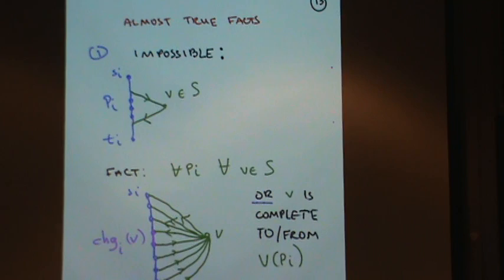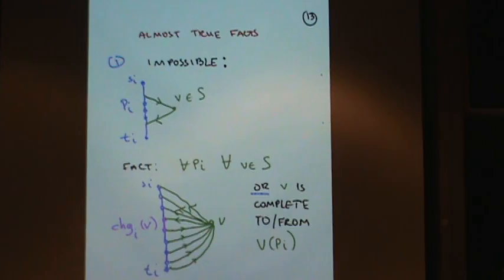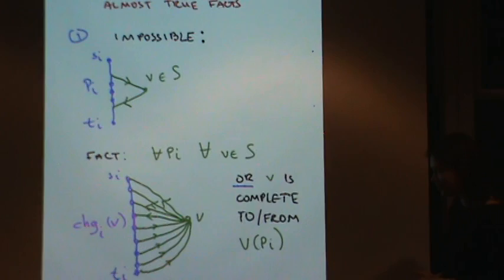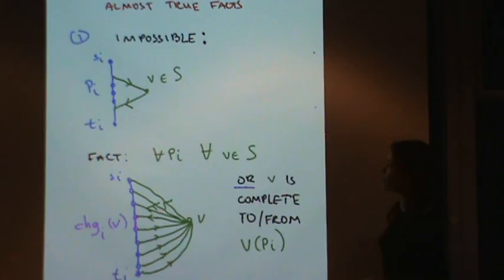I'm going to tell you a few things that are almost true — something slightly more complicated is actually true, but I'm going to restrict myself to things that are almost true. The next thing I want to do is analyze how surplus vertices get attached to the path.